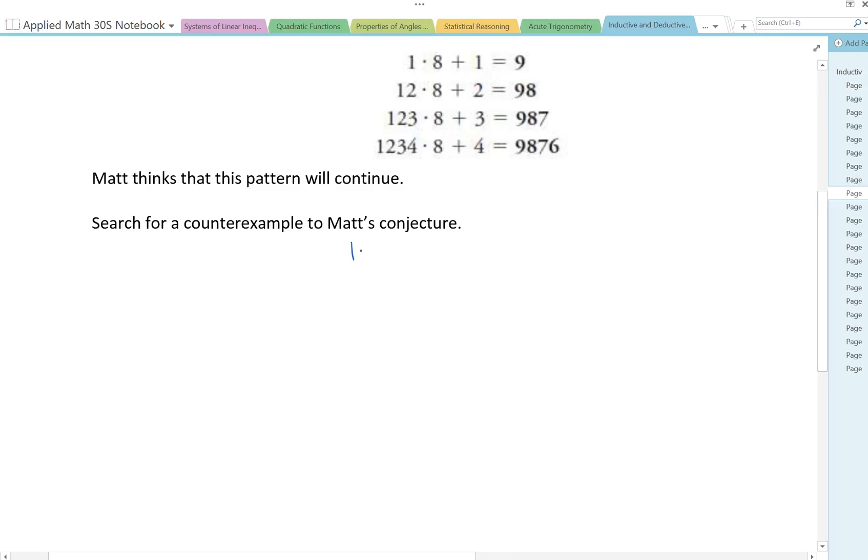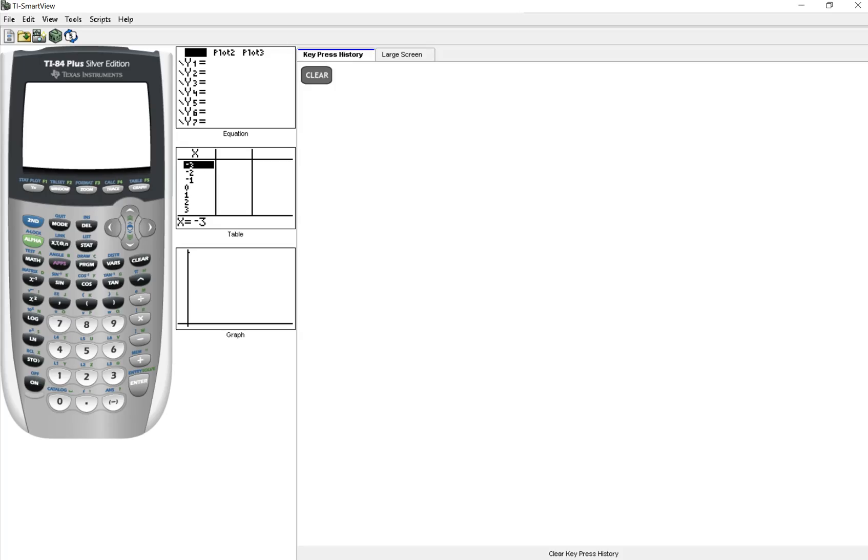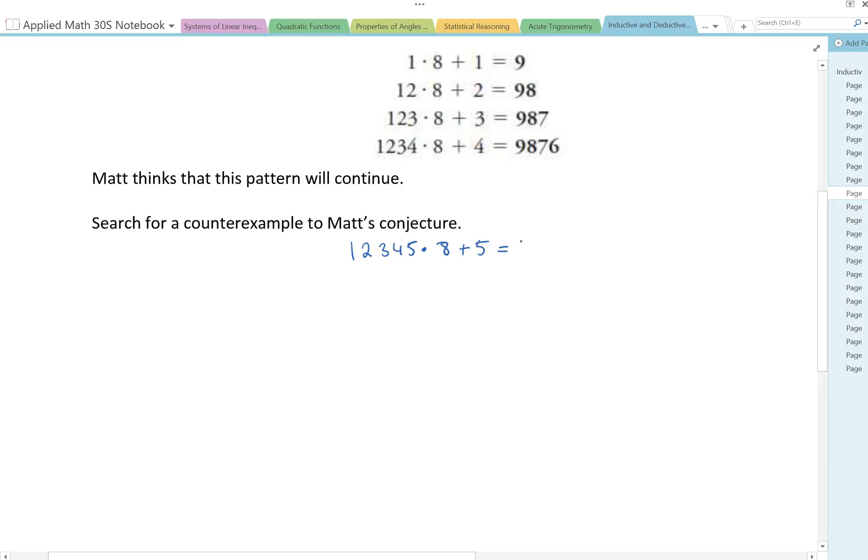So the next one would be 1, 2, 3, 4, 5, or 12,345. Then he multiplied that by 8. And instead of adding 4, we can see that this pattern is going 1, 2, 3, 4. So you'd add 5 this time. And we want to know if that's going to be equal to 9, 8, 7, 6, 5. So take out our calculators. So we'd have 1, 2, 3, 4, 5. Times that by 8. Add 5. And we get 9, 8, 7, 6, 5.